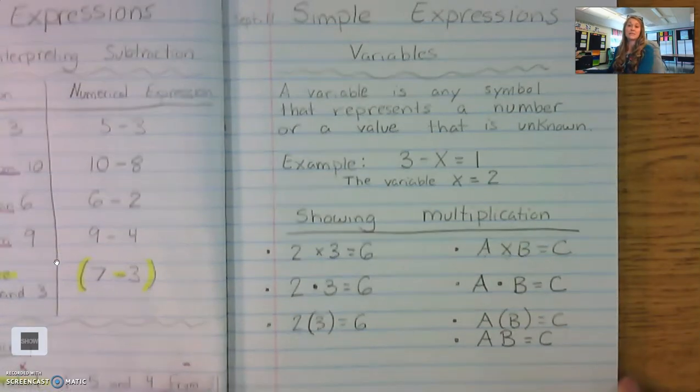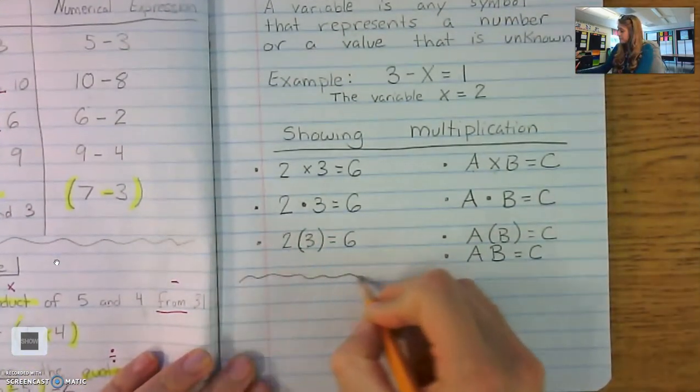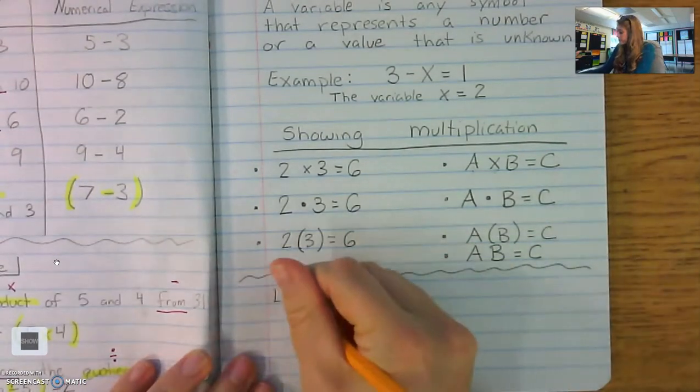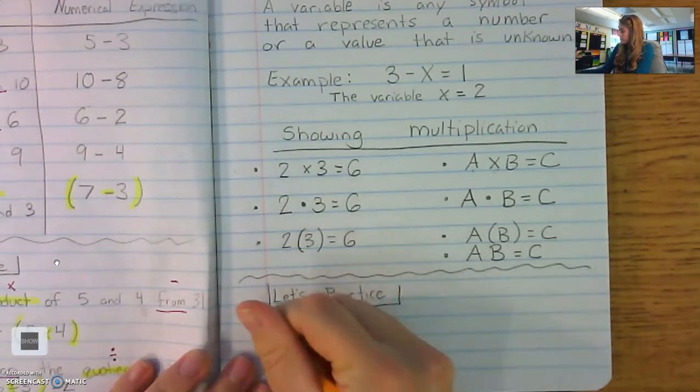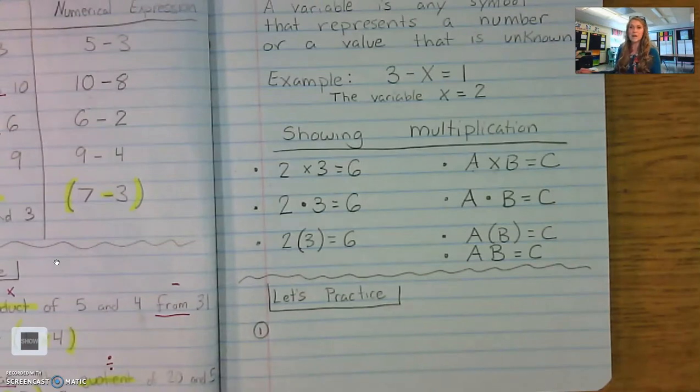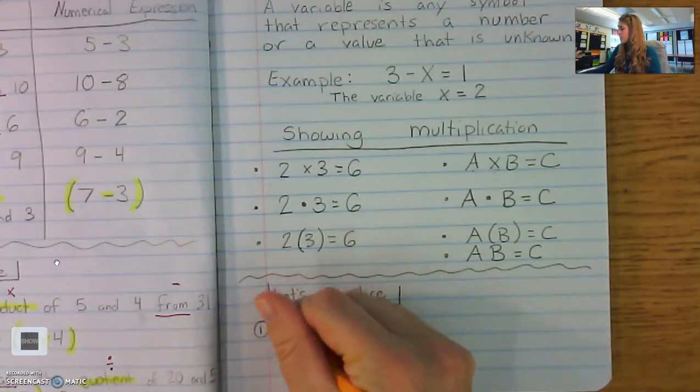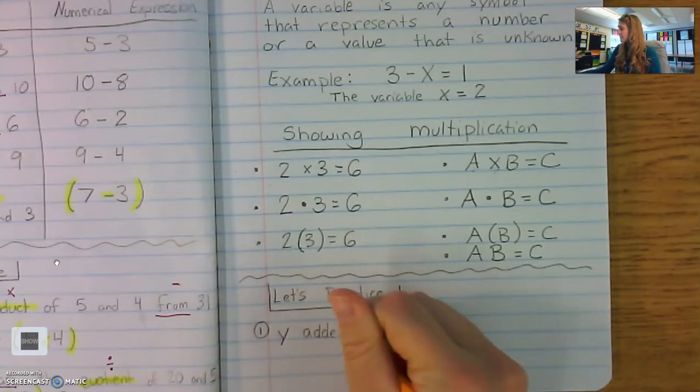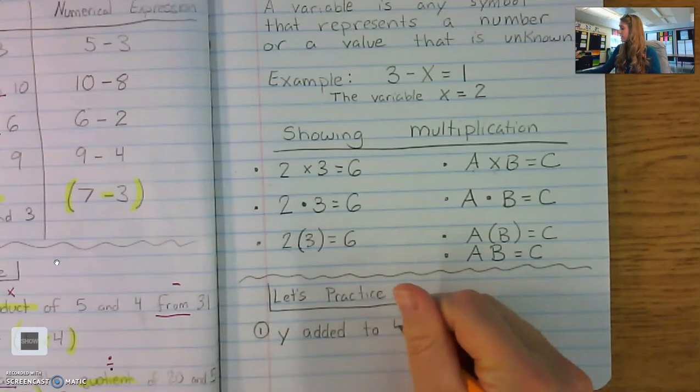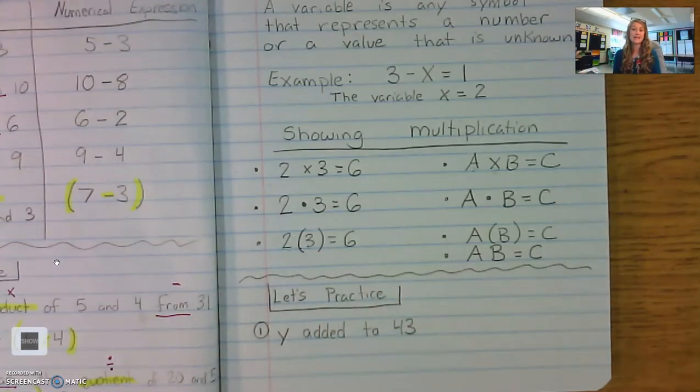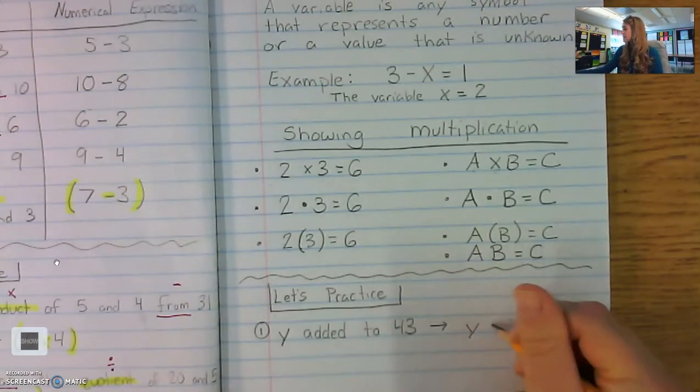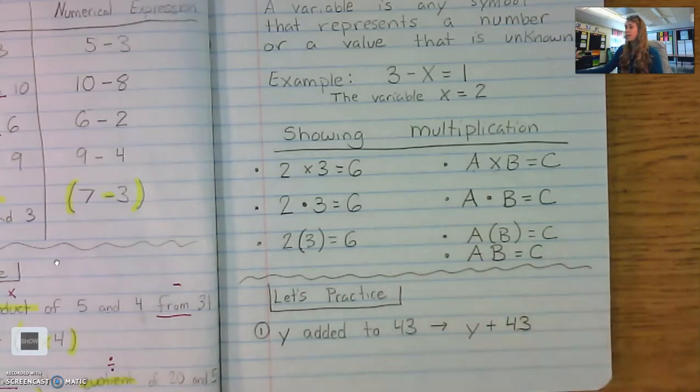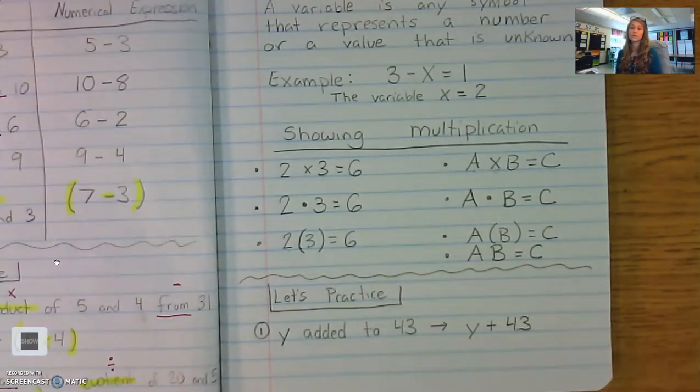Okay, so let's start off with an easy one. What if you saw y added to 43? How would we write that as an algebraic expression? Yeah, just the way that it sounds. Y added to 43 or y plus 43. So the variable acts just like a number would. Can we try one more?